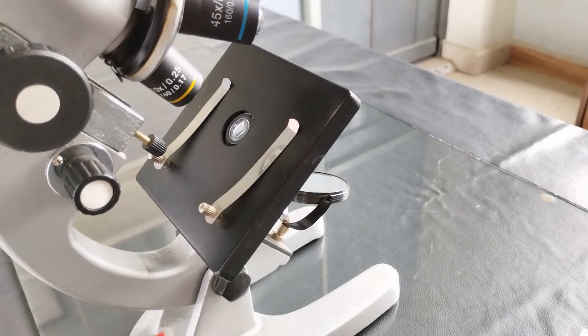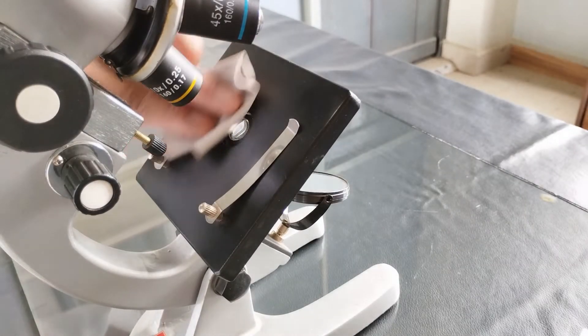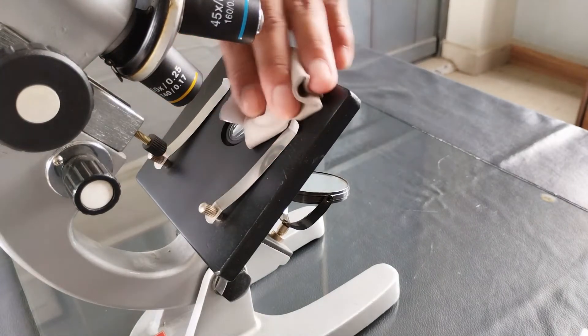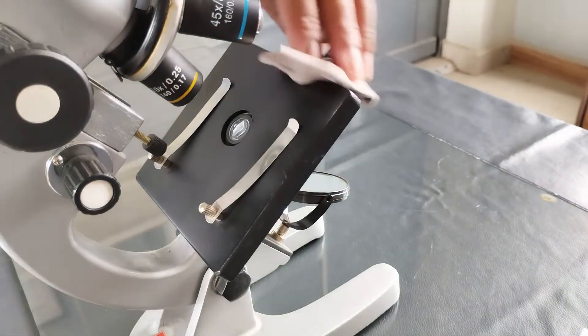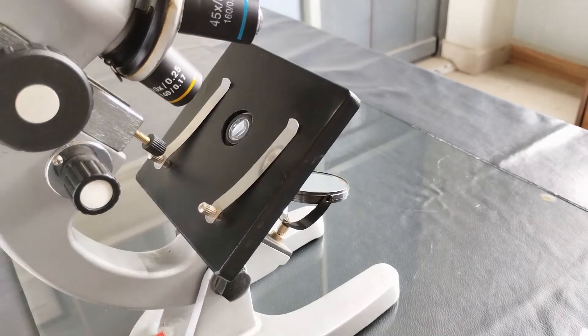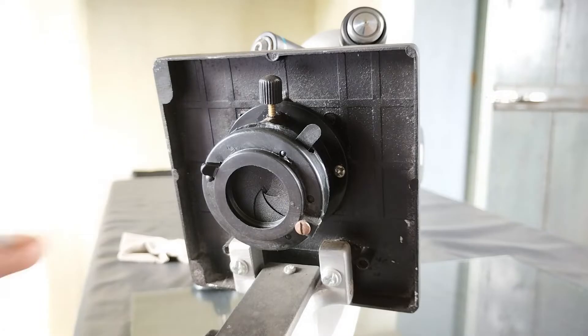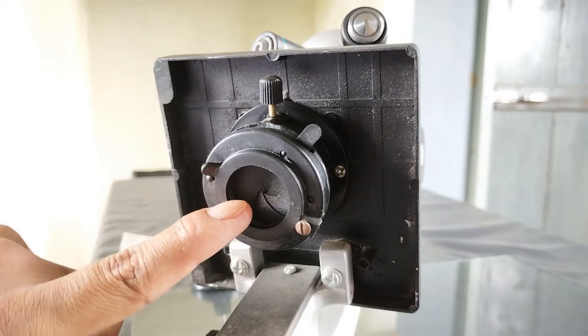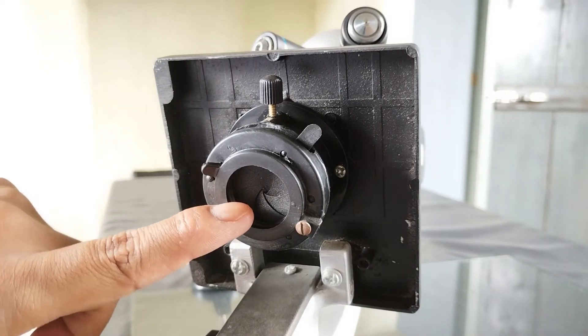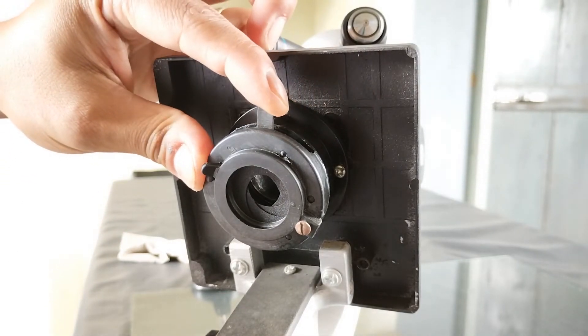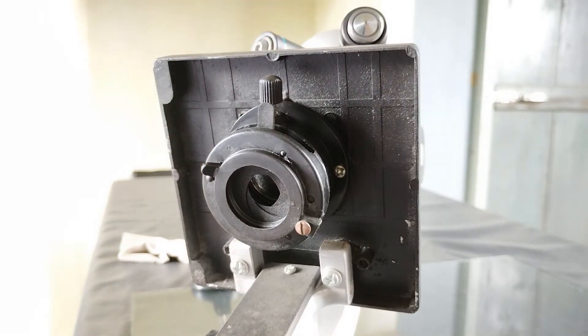Wipe the specimen stage with lint-free tissue or cloth to remove dust and debris. If the microscope comes with a condenser, check the iris diaphragm. Make sure it's at least partially open. If fully closed, adjust the aperture using the diaphragm adjuster that sticks out from the condenser body. Also, make sure the condenser lenses are free from dust and dirt.